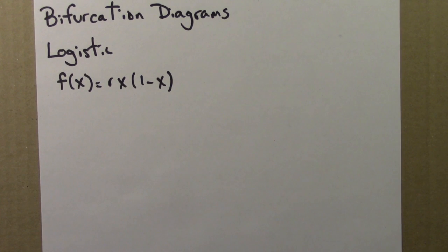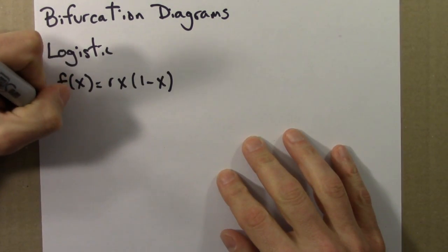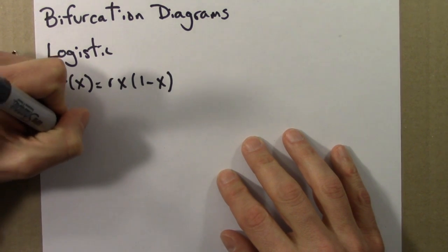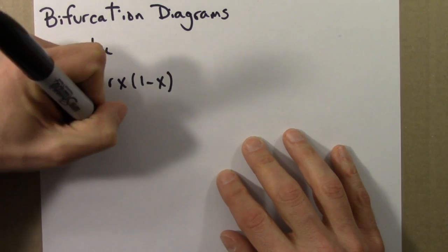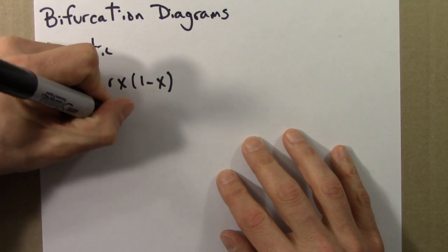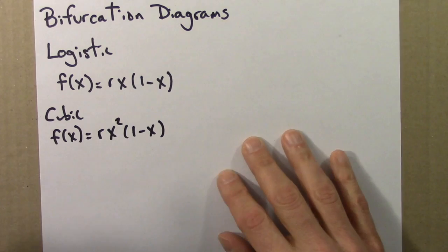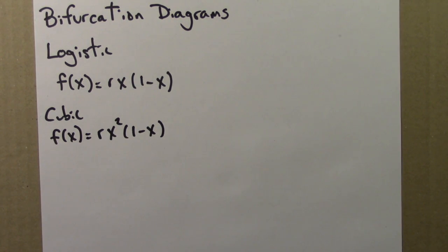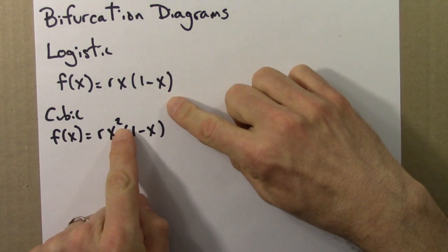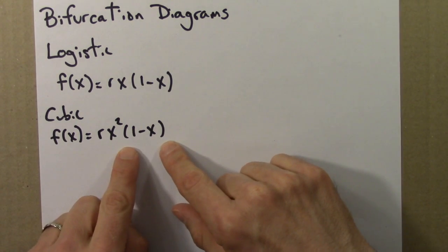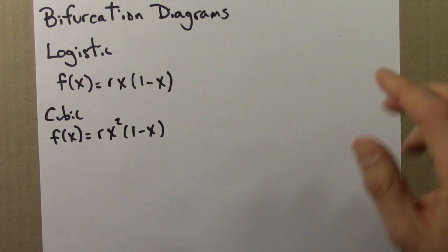The first example I'll do is the cubic equation. And that's almost the same as the logistic equation, but I just square the x here. So there's the cubic equation: f(x) = rx²(1-x). The only difference is a square here. It's called cubic because if you multiply this out, you get an x cubed term, hence cubic.